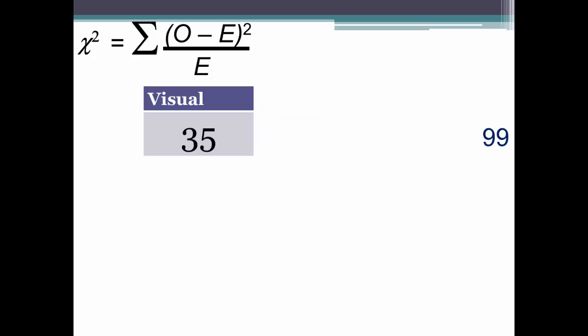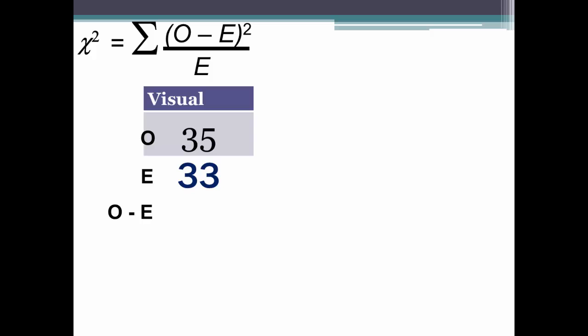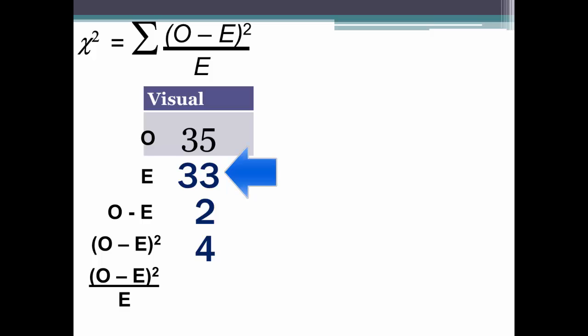Let's focus first on the visual cell. We have 99 observations — sometimes called instances or cases — and in this cell you have an observed frequency of 35. Step 1 is to calculate the expected frequency: total observations (99) divided by the number of categories (3) equals 33. Next, subtract the observed (35) from the expected (33), yielding 2. The formula tells us we now have to square that, so we are at 4. Now divide 4 by the expected (33), and we get 0.12.